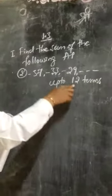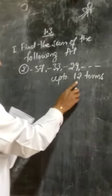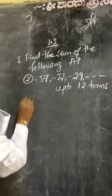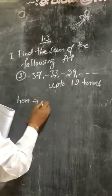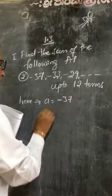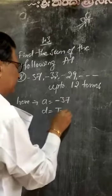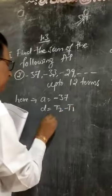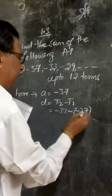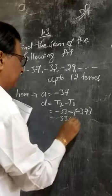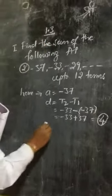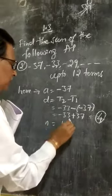They are not asking here the 12th term. They asked here only up to the 12th term what is the sum here. So here, the available terms: A is equal to minus 37. D is equal to T2 minus T1, minus 33 minus minus 37 is equal to minus 33 plus 37, is equal to 4. Plus 4 is the common difference here. N is equal to 12 terms.